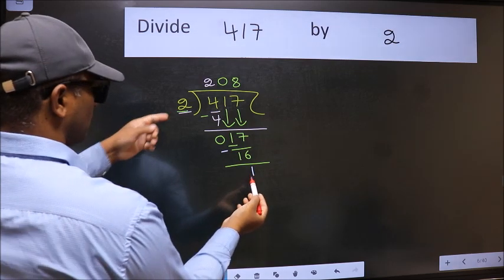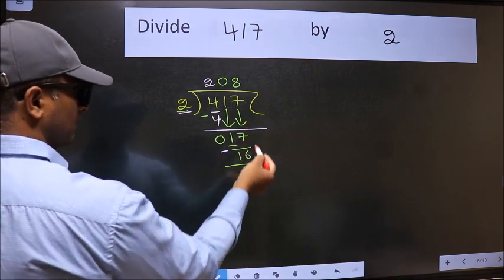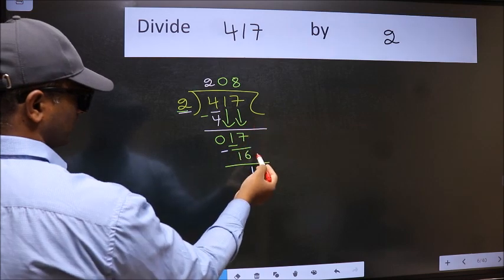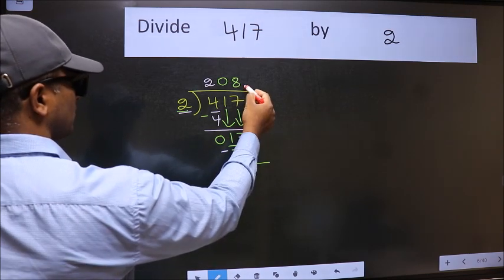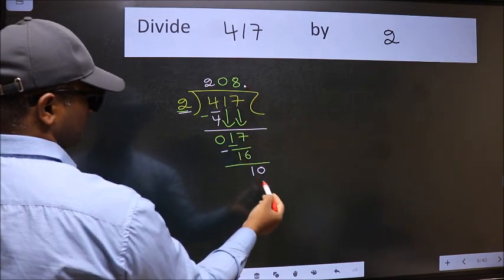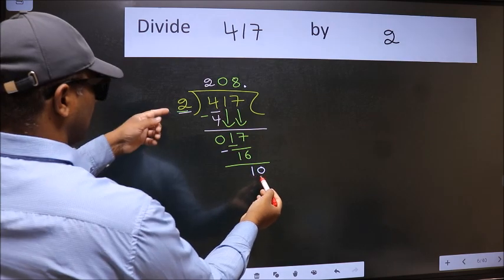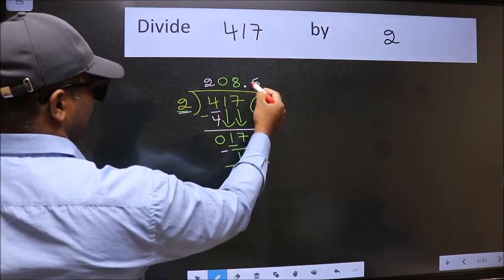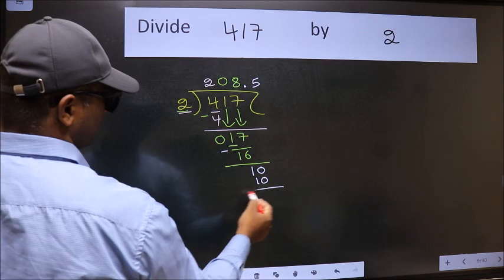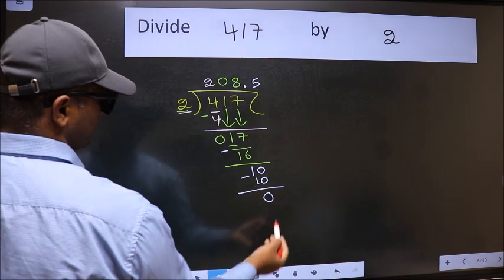1 is smaller than 2 and we don't have any more numbers to bring down. So we should put a dot and take 0. So 10. When do we get 10 in the 2 table? 2 times 5 is 10. Now we should subtract. We get 0.